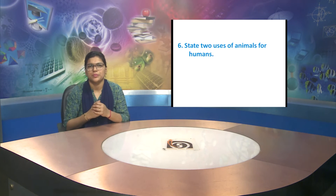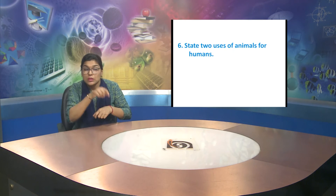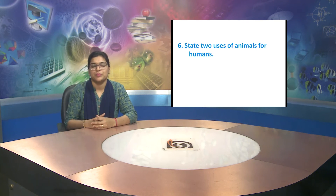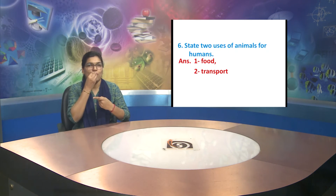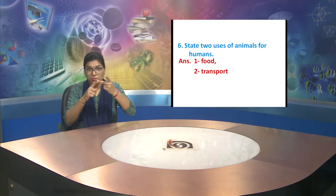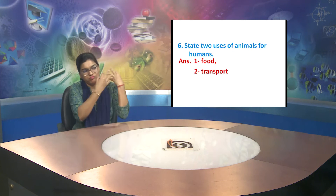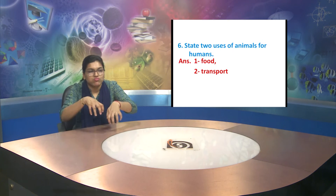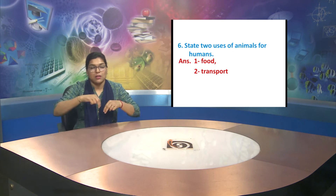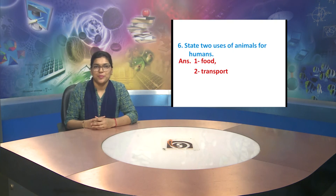Question six. We have to state two uses of animals for humans. What are the uses? Let us see the answer. The first use of animals is they were used as food, and the second use is animals were used for transportation, from one place to another. So humans used animals for food and transport.